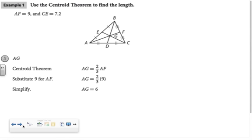In example one, part A, they're asked for the length of segment AG. They're told that AF is nine and that CE is 7.2. Well, AG is a part of AF. I don't need CE at all. I'm asked for AG. That's going to be two-thirds of AF. So they take two-thirds of nine and get six.